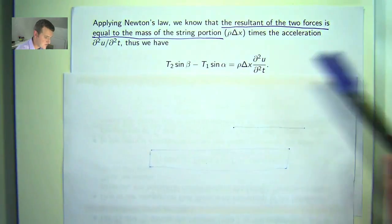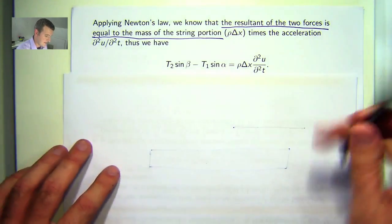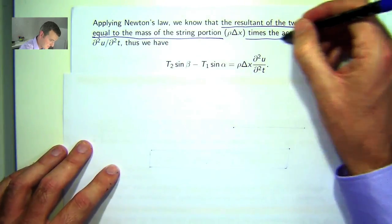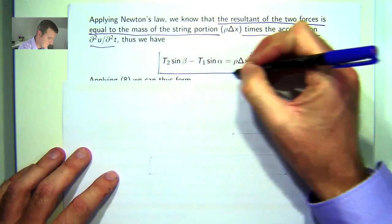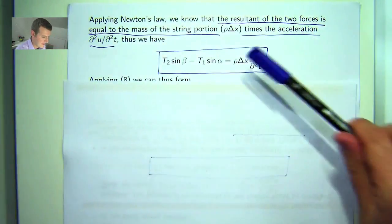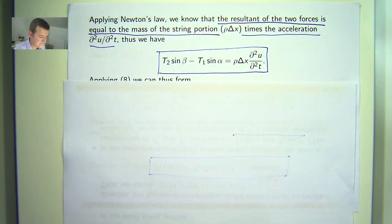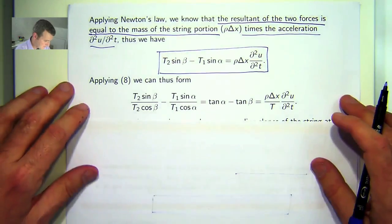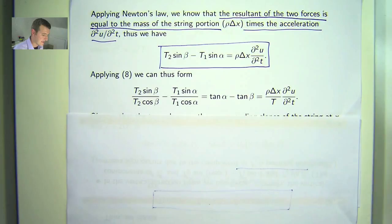Thus, we have the resultant forces equal to this product: T2 sin beta minus T1 sin alpha equals rho delta x times the acceleration. We can now play with this expression and come up with our PDE.